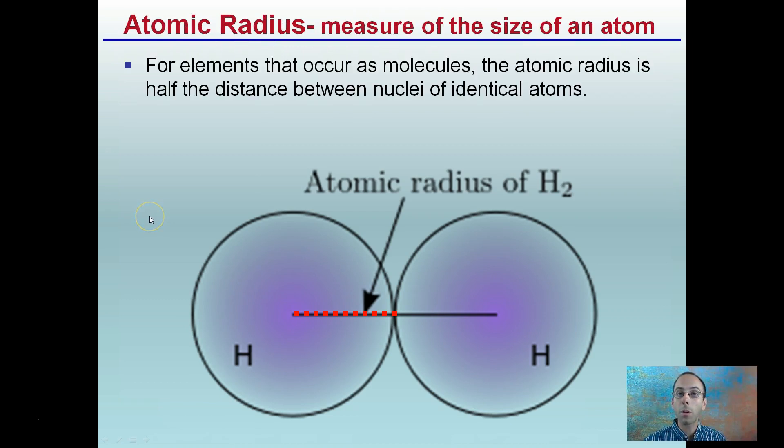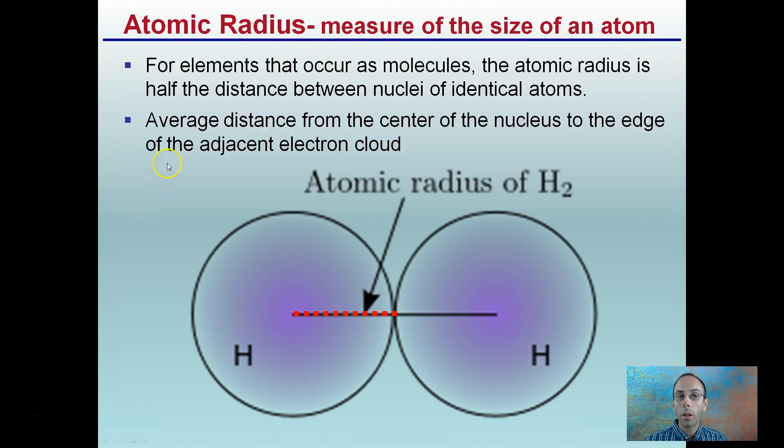So starting first with atomic radius, it's a measure of the size of an atom. For elements that occur as molecules, the atomic radius is half the distance between nuclei of identical atoms. You see right here. The average distance from the center of the nucleus to the edge of the adjacent electron cloud is determined to be the radius.